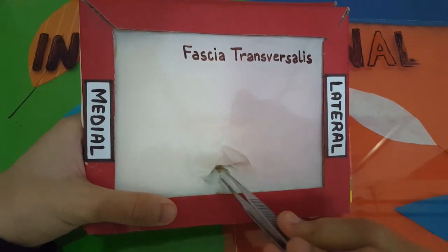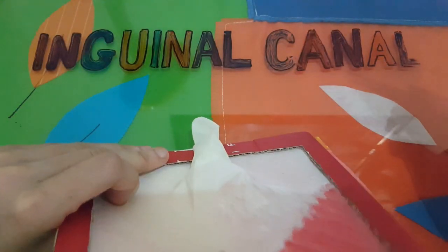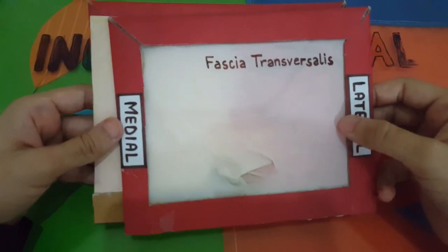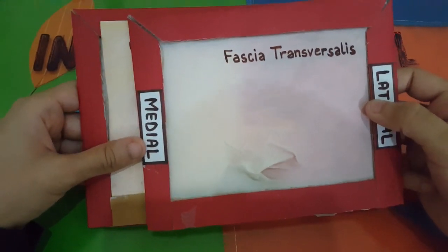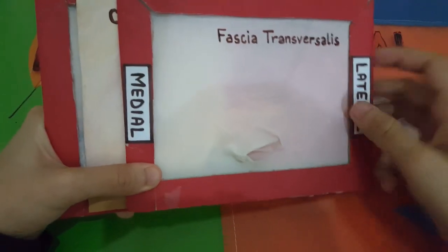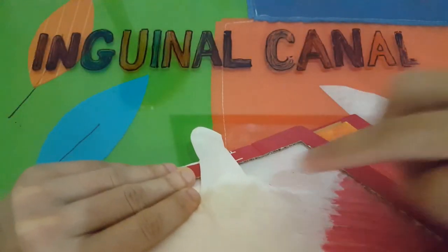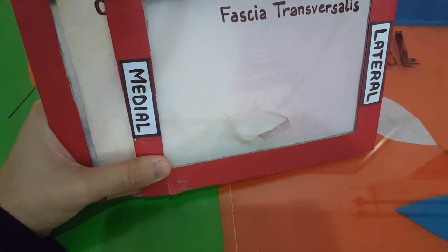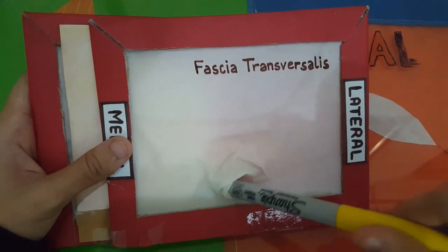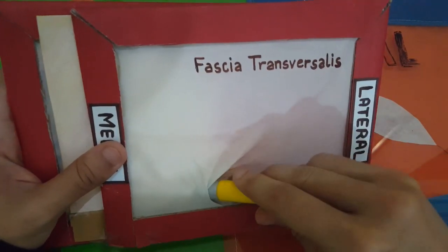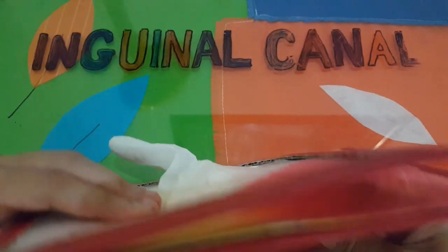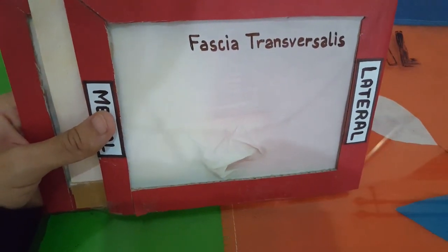In a baby, the deep inguinal ring and superficial inguinal ring are well aligned in front of one another. But as the child grows, the layers of the abdominal wall slide past one another — the inner layers moving more laterally compared to the outer layers which stay medially. This results in the deep inguinal ring becoming lateral to the superficial inguinal ring, and the canal becomes diagonal through the abdominal wall. So now the spermatic cord takes a diagonal route to travel into the scrotum through the inguinal canal — this is our adult inguinal canal, and now we will see its boundaries.